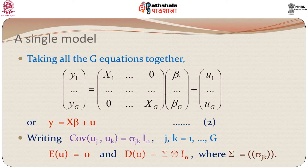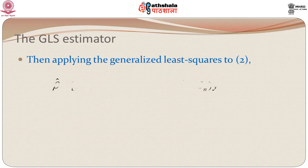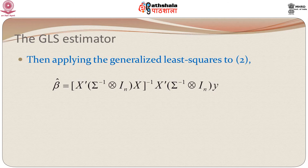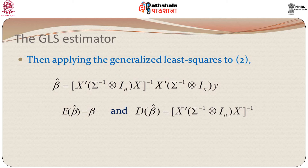Since the dispersion is not an identity matrix, it is not spherical; hence we need to apply generalized least squares to the combined model. Using the GLS estimator, we have: beta_hat = (X' * (Sigma^{-1} ⊗ I_n) * X)^{-1} * X' * (Sigma^{-1} ⊗ I_n) * y. This is the generalized least squares estimator of beta. The expected value of beta_hat equals beta, and the dispersion is (X' * (Sigma^{-1} ⊗ I_n) * X)^{-1}.